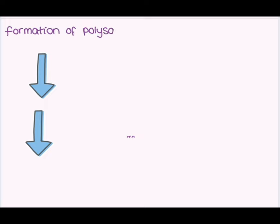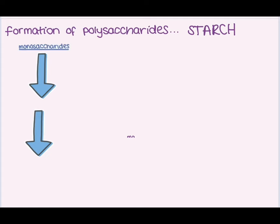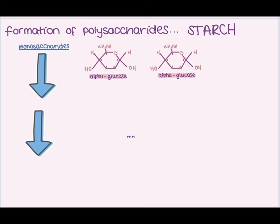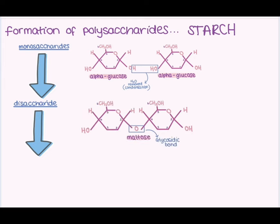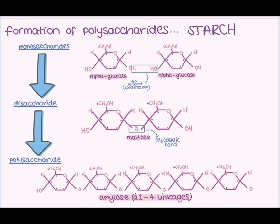As we combine more than two monosaccharides, we are beginning to build a polysaccharide. The word poly in Greek means many or multiple, and saccharides is the Greek term for sugar, so we are literally translating to many or multiple sugars. The first polysaccharide is starch — a glucose storage molecule found inside plant cells only. Starch is made up of alpha glucose molecules repeating one after another through condensation reactions, continuing to add more alpha glucose to the chain until we have our polysaccharide.